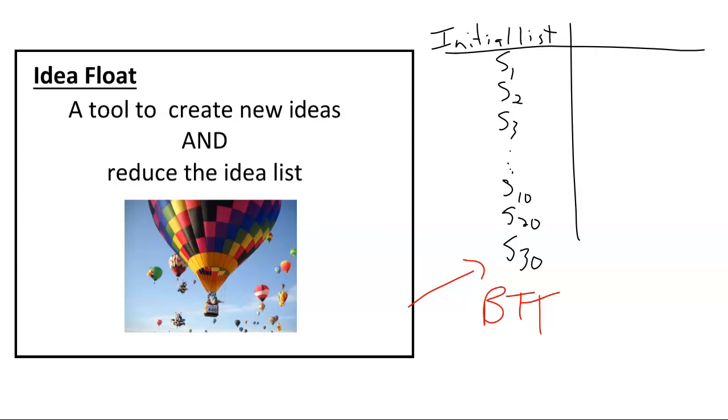We came up with a whole suite of other solutions that I have displayed here. And so let's say that there are 31 solutions, including bank teller tubes. If I want to weed out the outlandish, but also try to distill the essence of the outlandish into a new solution set, I do a two-part exercise called an idea float.